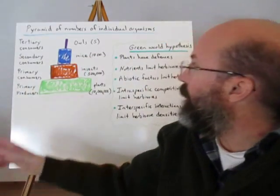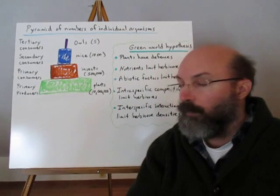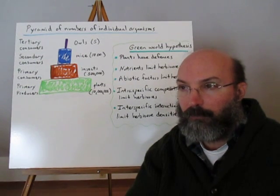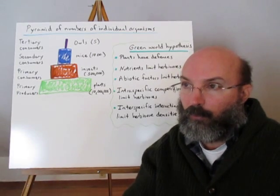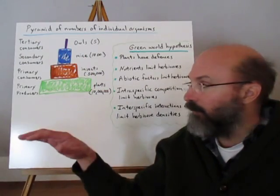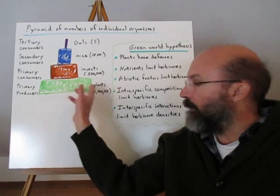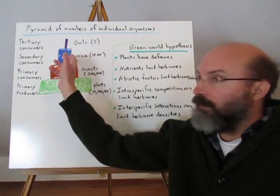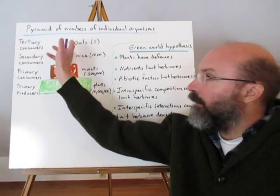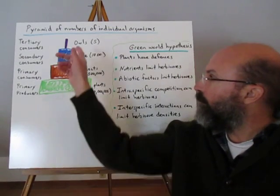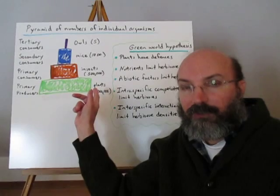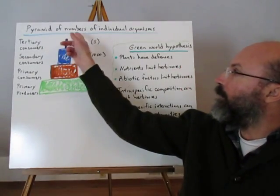Another way to look at these levels is pyramids of individual numbers. On the savanna, there are tens of millions of grasses and plants, but only a thousand zebra and only a dozen lions — huge differences in numbers across trophic levels. Primary producers have the most individuals, primary consumers the next largest group, then secondary consumers, and at the very top very few individuals. There would be very few owls in a forest, more mice, more insects, and more plants. So we can construct a pyramid of numbers of individual organisms.